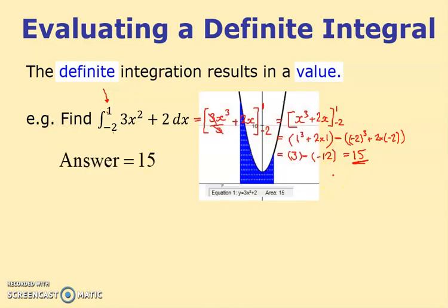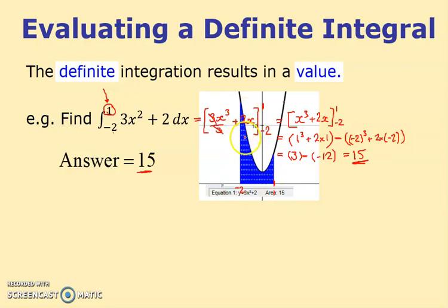Critically there's a minus between them: 3 minus (minus 12) is actually 15. There's my answer: 15. Notice in my picture the curve 3x squared plus 2 is drawn, with 1 and minus 2 marked on the graph. What the software — a package called Autograph — has done is colored in the section underneath the graph, down to the x-axis. It's shaded the area underneath between those limits, and the area shown is 15. So we're starting to get a feel for what integration represents.